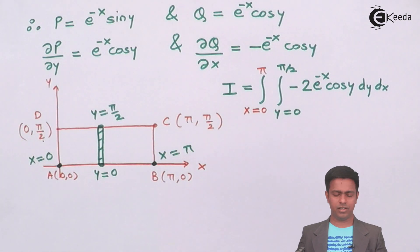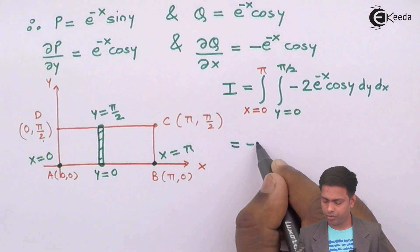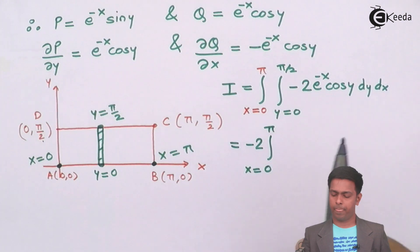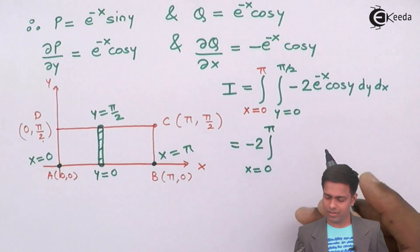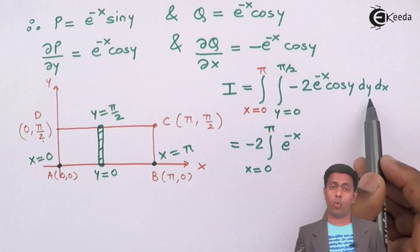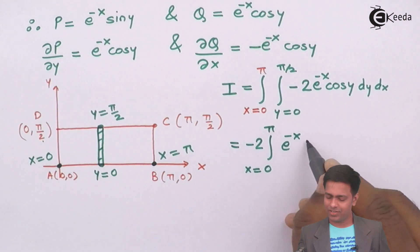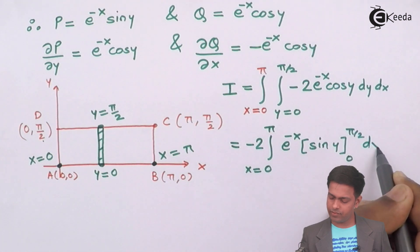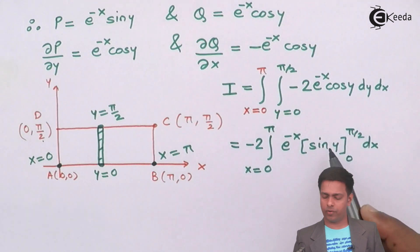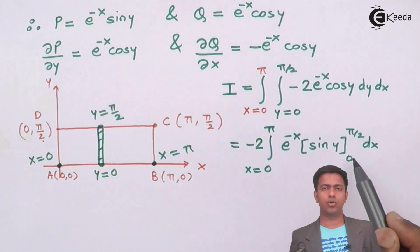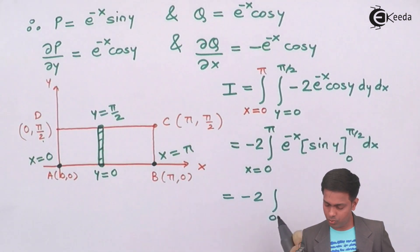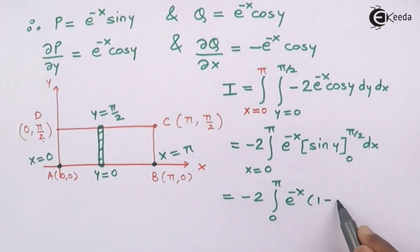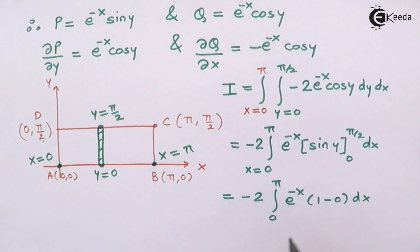Now we evaluate the integration. Minus 2 is a constant, so I take it outside. For the inner integral with respect to y: e to the power minus x is constant, and the integral of cos y is sine y. Applying limits 0 to π/2: sine(π/2) minus sine(0) equals 1 minus 0 equals 1. So we get minus 2 times the integral from 0 to π of e to the power minus x dx.